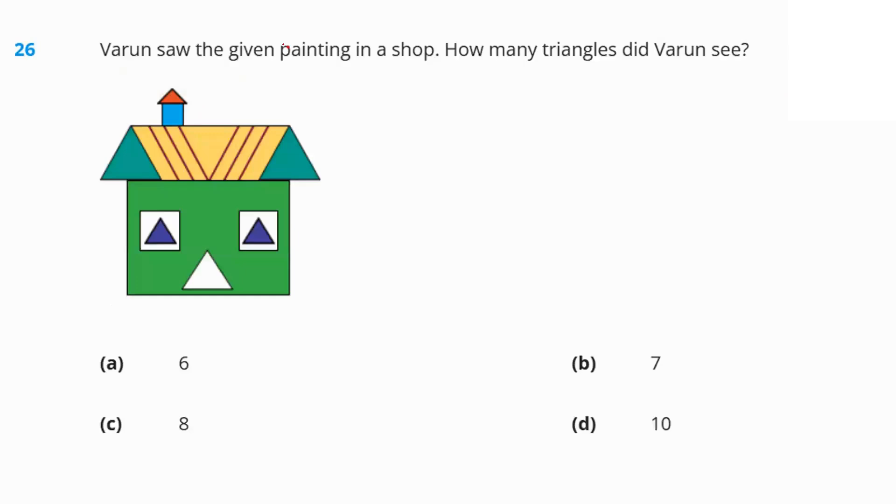Question number 26. Varun saw the given painting in a shop. How many triangles did Varun see in the picture? 1, 2, 3, 4 over here. This is the 5th one. This is the 6th one. And this one 7. So, 7 option B.